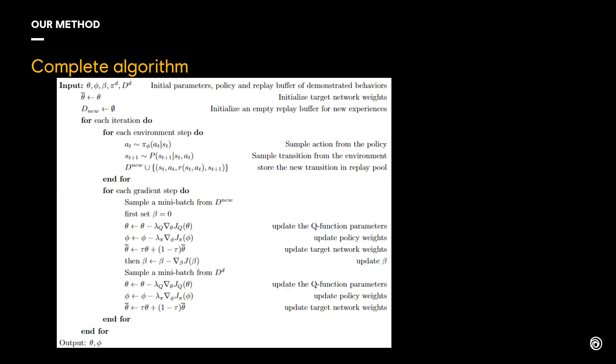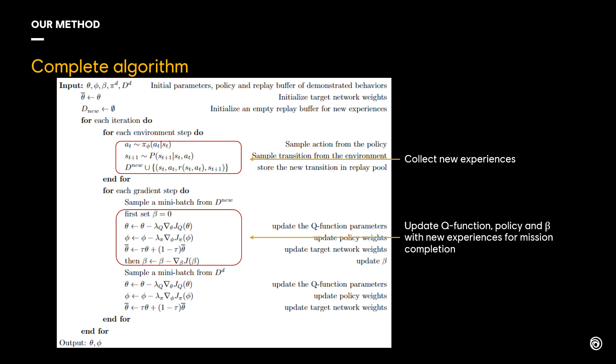The whole algorithm has three parts. The first part is for collecting new experiences. The second part is using the new experiences to update the Q function, policy, and calculate beta. This part encourages the agent to learn how to complete the main task.